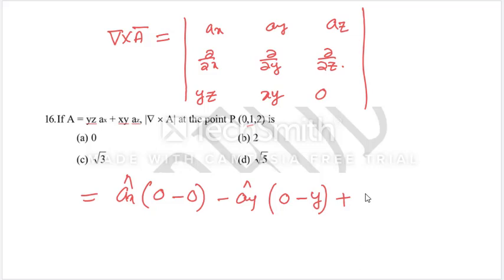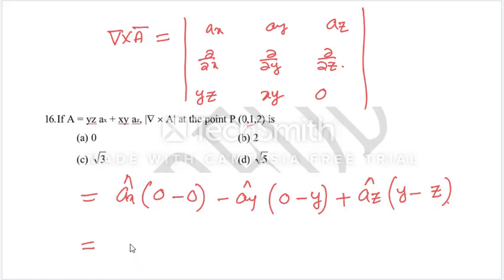Minus zero, minus a y-cap into one zero minus y. Check it once. The y minus j integral - this value is zero. The y value is given as one, z value is two, so this gives minus a z-cap.